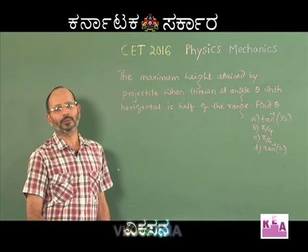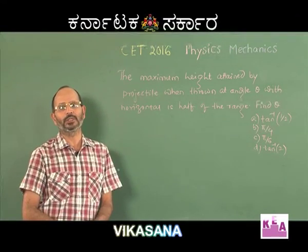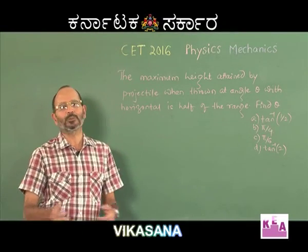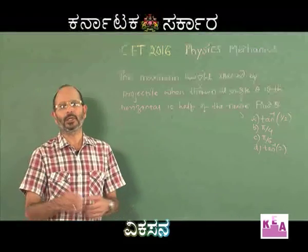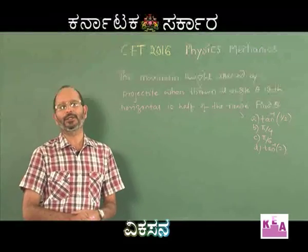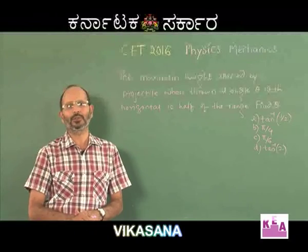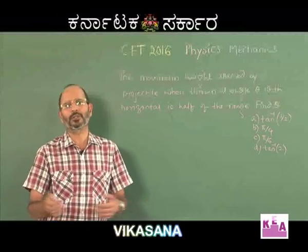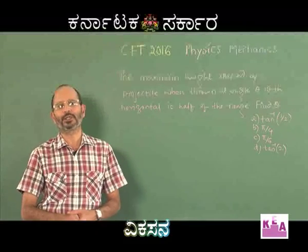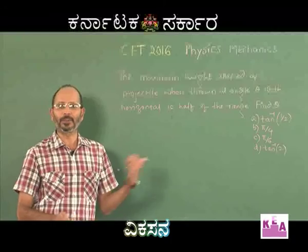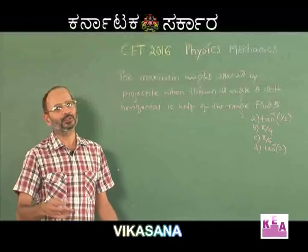The key formulas for projectile motion are: maximum height = u² sin²θ / 2g; range = u² sin 2θ / g; and time of flight = 2u sinθ / g. If you directly remember these formulas, you can solve simple substitution-type problems. Let me now read the present problem on the board and see how we can solve it.